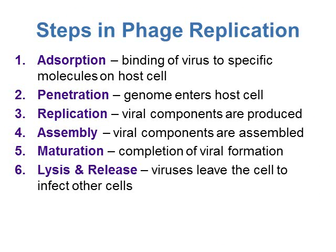Steps in bacteriophage replication: first, absorption — the virus binds to the host cell. Second, penetration — only the genome enters the host cell; no part of the capsid enters, just the DNA or RNA. Third, replication — the genome takes over the host cell and all viral components are made. Fourth, assembly of those viral components. Fifth, maturation — the viruses are completely formed. And sixth, lysis and release — the virus leaves the bacterial cell to infect others.